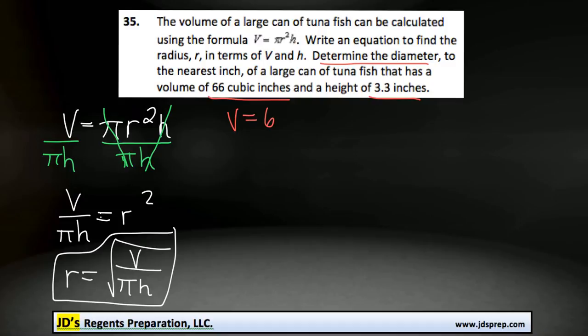So the volume is 66 and our height is 3.3. And we're trying to find out the diameter, but of course that's double the radius, so let's find out the radius first.